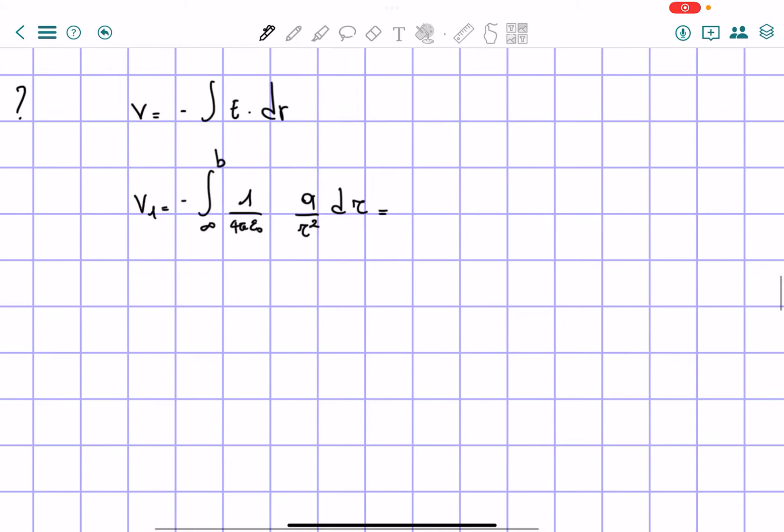So we take out the constant and we have 1 over, actually we'll take out the q, so q over 4 pi epsilon naught integral of 1 over r squared dr from infinity to b.